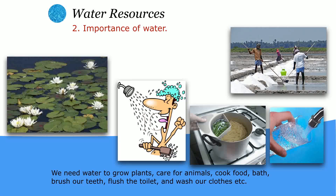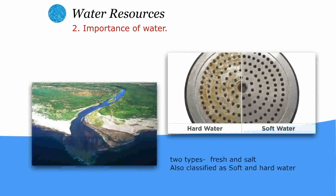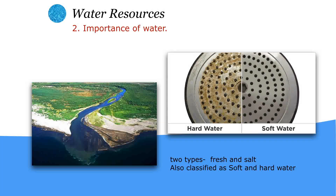We use water for domestic purposes like bathing, cooking, and drinking. Some industries are completely dependent on water, like the salt industry. Water is of two types: fresh water and salt water. Fresh water does not have a salty taste, while salt water has a salty taste. Examples of fresh water are rivers, lakes, and ponds, while examples of salt water are sea water.